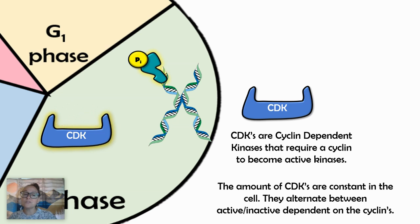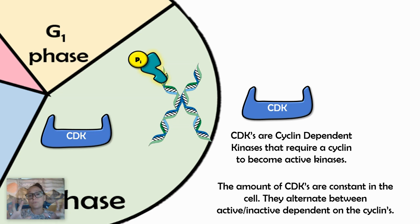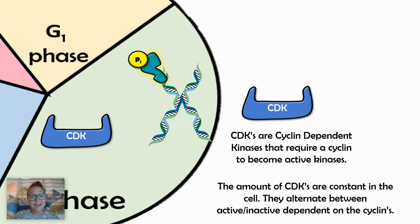The S cyclin doesn't stay forever. If it stayed forever, we'd be constantly replicating our DNA — and that doesn't happen. The cyclin is only used temporarily and then it degrades, and the CDK returns to inactive.